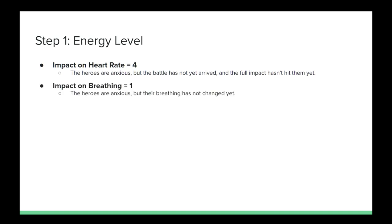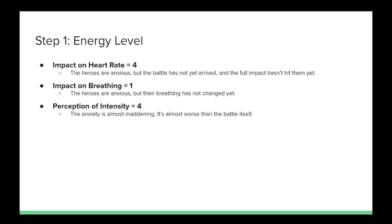Impact on Breathing — Score: One. The heroes are anxious but their breathing has not changed yet. They are left with their thoughts as they wait for hours until the battle begins, even managing to get some sleep. Perception of Intensity — Score: Four. The anxiety is almost maddening. The heroes dread the upcoming battle but almost wish it would hurry up and arrive. The waiting almost feels worse than the battle itself.